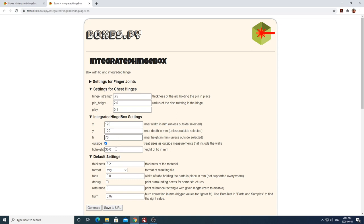I've set the thickness of my stock to 3.2 millimeters, the file to be exported as an SVG, zero tabs, I've left the debug unchecked and set the reference to zero. I've set my burn to 0.07 which is kind of like laser kerf. I've gone ahead and hit the generate button and you can see here the SVG file that the site has produced for me. Note that these are just my settings and you'll of course have to play around with the settings to fit your machine and whatever material you'll be using.